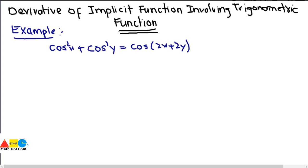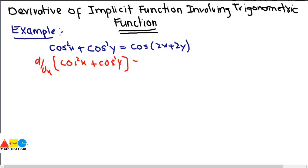So here we have an example. Let's find its derivative as d by dx of cos squared x plus cos squared y equals to d by dx of cos of 2x plus 2y.